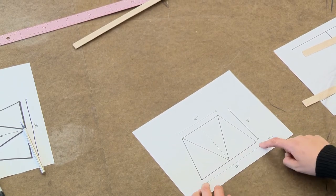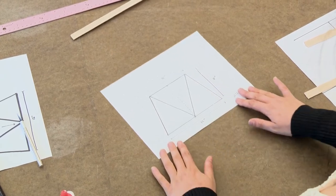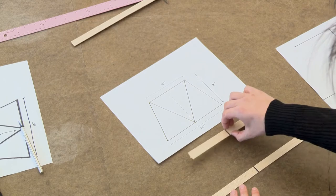So the first step is to cut. I cut my 12 inch strip that goes on the bottom and my 8 inch strip that goes on the top. So I have those here, the 12 inch and the 8 inch.